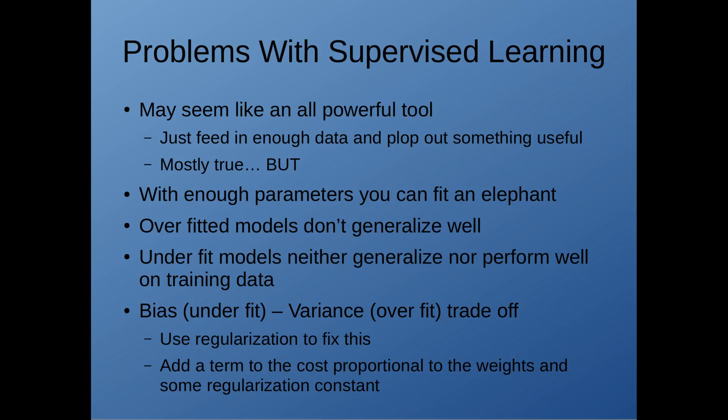But the problem is that when you overfit to the data, your model does not generalize well. What that means in practice is if the model performs perfectly on all of your training data, it may not necessarily correctly predict a new unseen case. Conversely, underfit models neither generalize well nor perform well on your training data. This is what is known as the bias and variance trade-off, which is a trade-off between underfitting and overfitting.